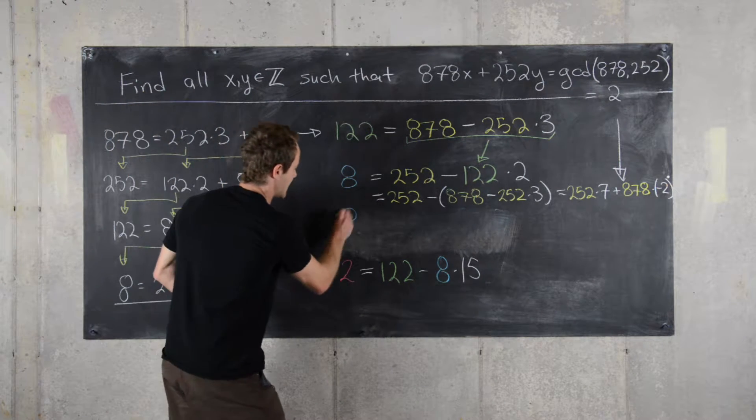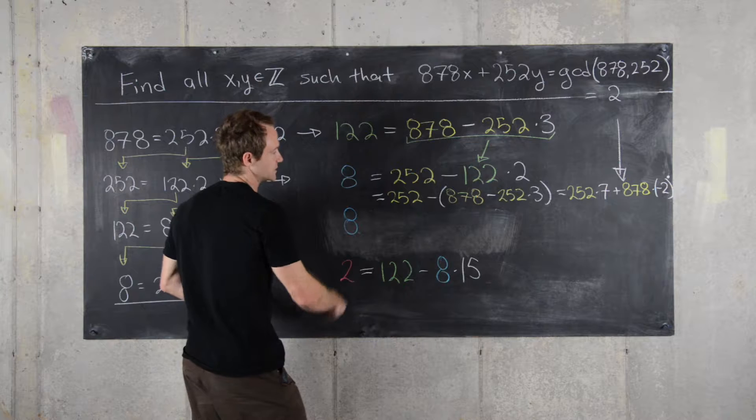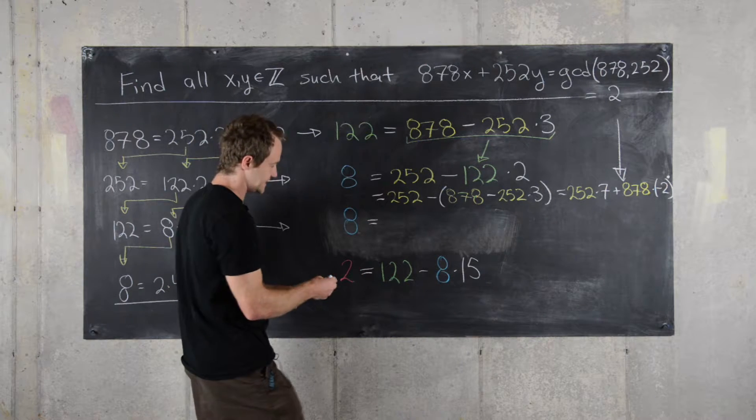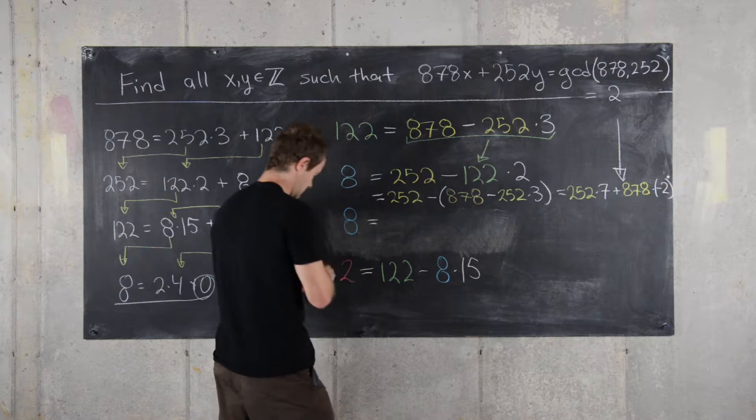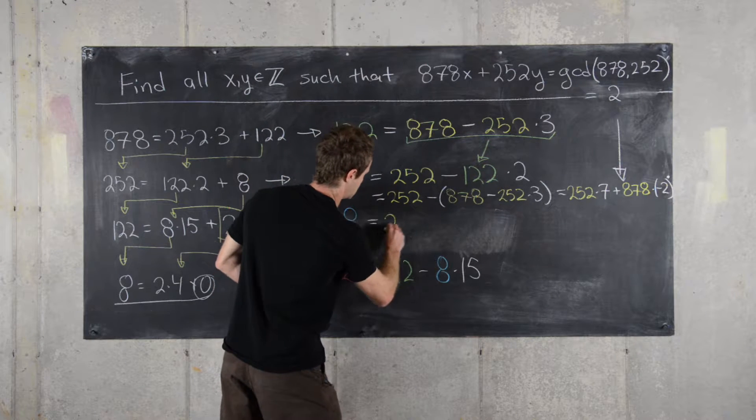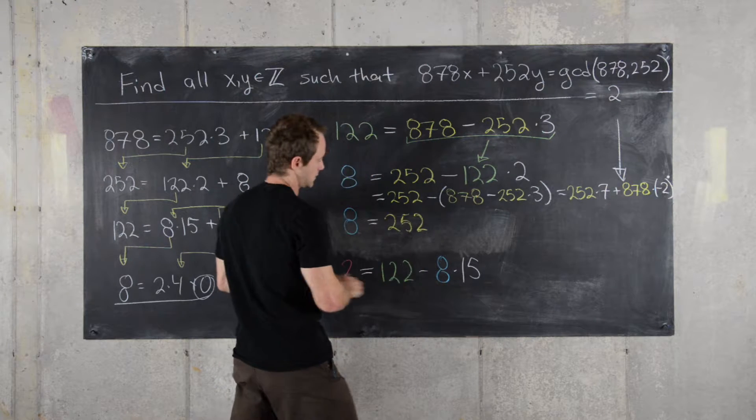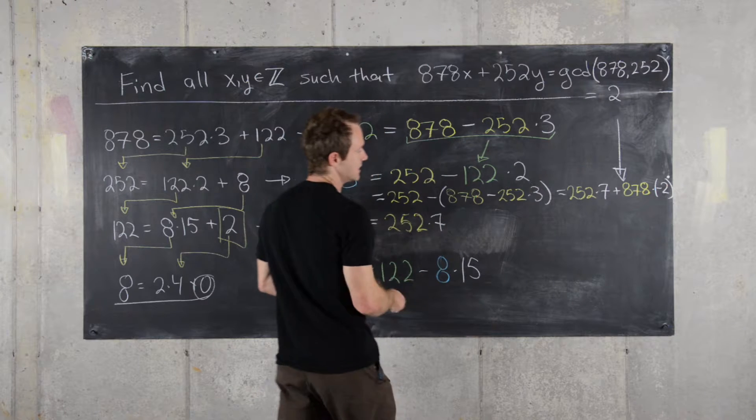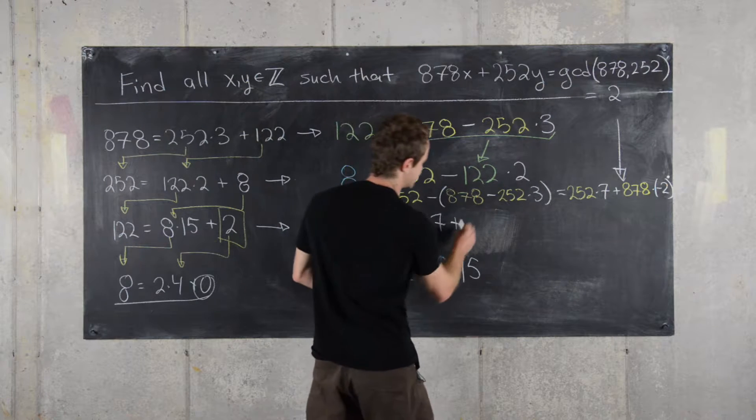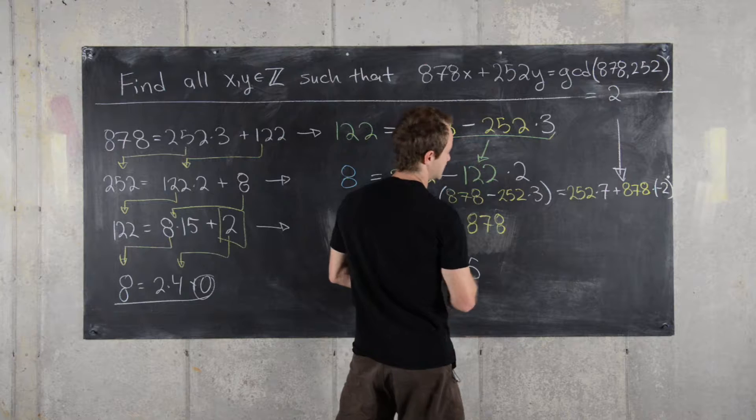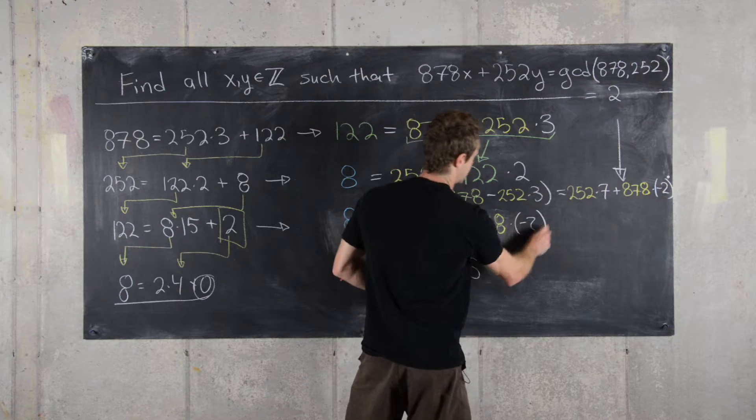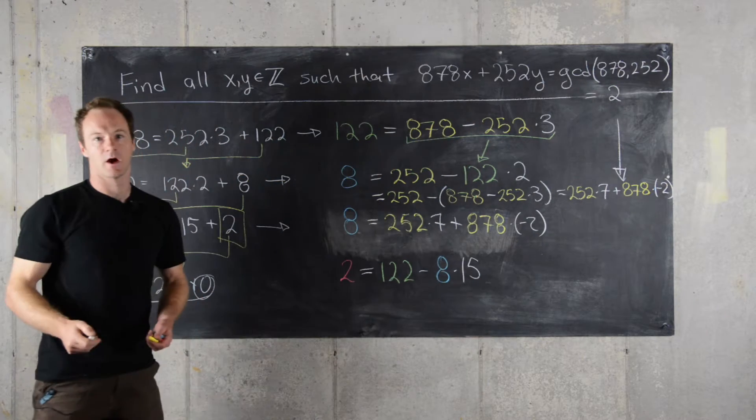And now what I'll do is I'll clean up 8 here, and I'll write 8 here is equal to 252 times 7 plus 878 times negative 2.